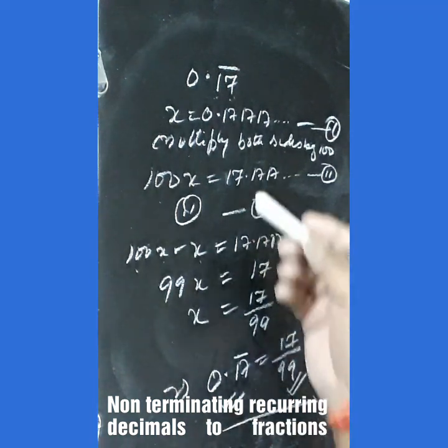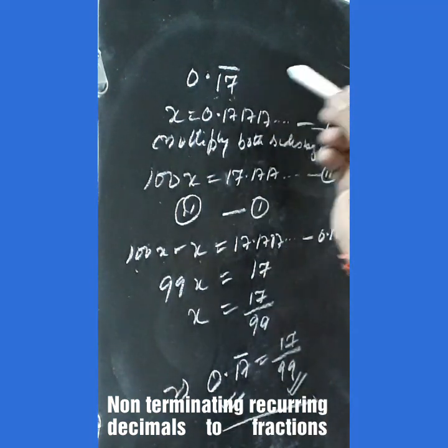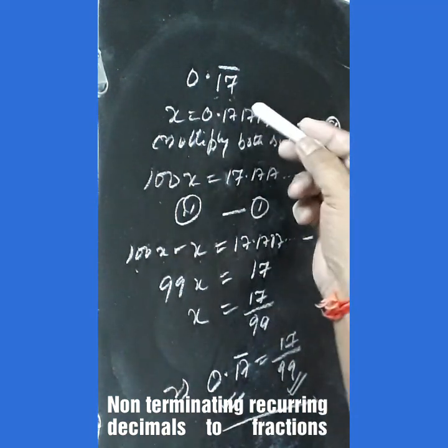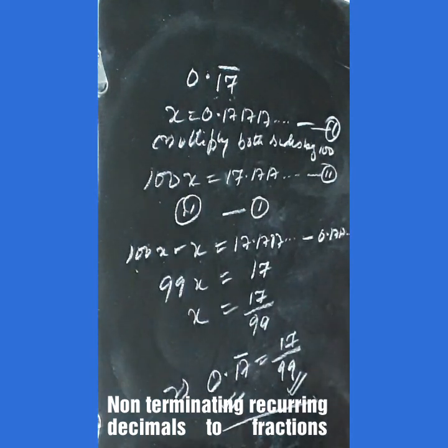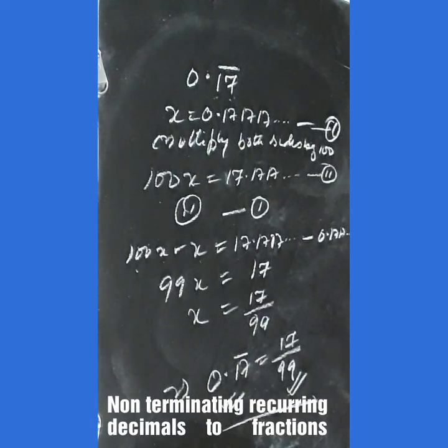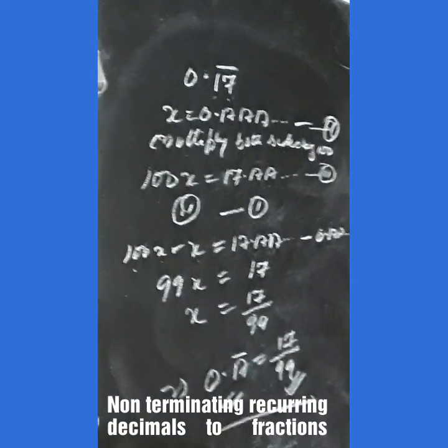In this way, if there is a bar over 3 digits, we will multiply both sides by 1000. In this way we can represent decimal numbers as fractions.